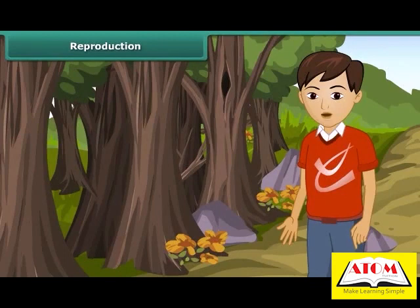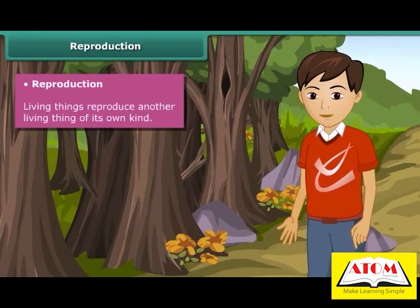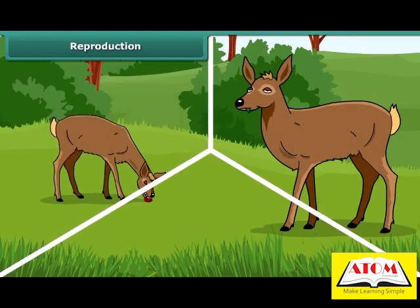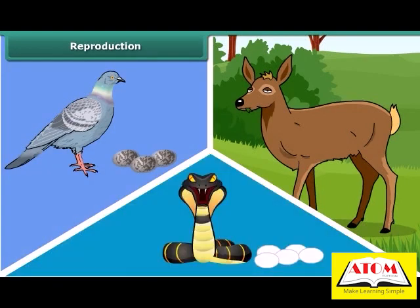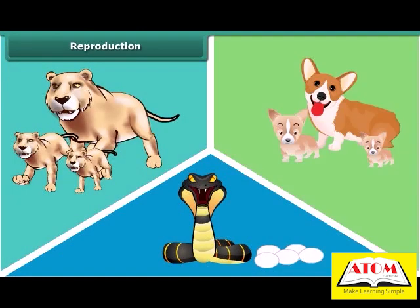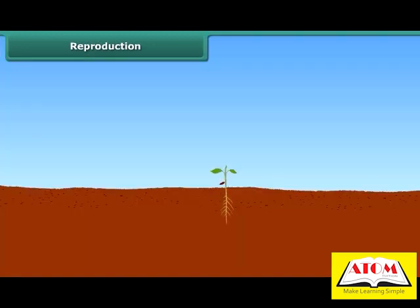A very important characteristic of living things is reproduction. All living things have the ability to reproduce another living thing of its own kind. Animals like pigeons, snakes, and frogs lay eggs, while some animals like lions, dogs, and humans give birth to young ones of their own kind. Plants reproduce through seeds or some other parts of the plant.